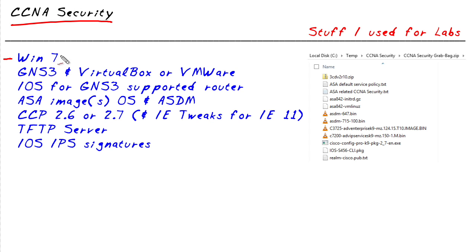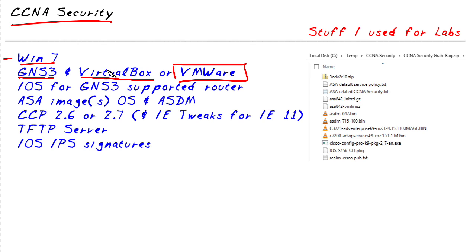I'd start off with a host running Windows 7. Windows 8 can be used, however it causes additional problems and grief that you have to work through. So if you have a host running Windows 7, that's a great place to start. You'd also want to download and install GNS3 and VirtualBox. If you have a license for VMware you can use VMware Workstation, however VirtualBox is free, so you can emulate virtual machines inside of your virtual environment.